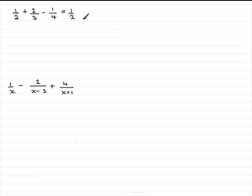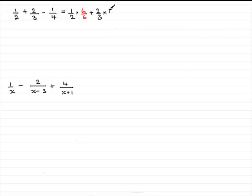For the first fraction, a half: if we times a half by one it remains as a half, but it's how we times it by one. To make it into twelfths, I change that one into six over six. Six over six is one, and we get one times six over two times six — six twelfths. For the second fraction, two thirds, that one becomes four over four, giving eight twelfths. For the last fraction, minus a quarter, we select three over three, giving three twelfths.